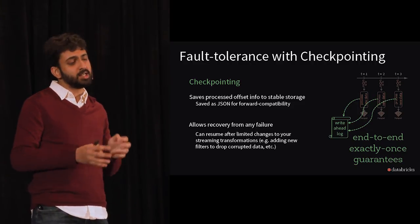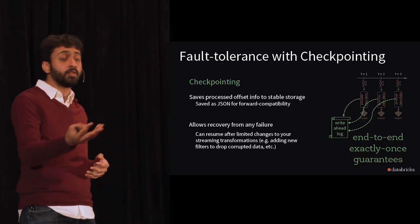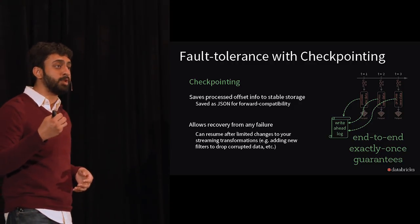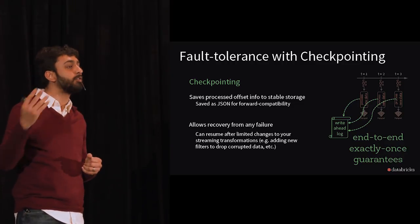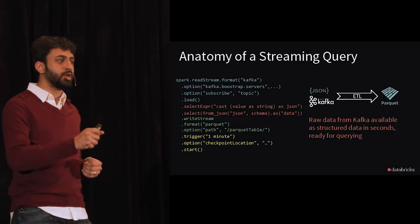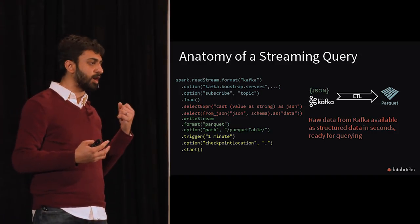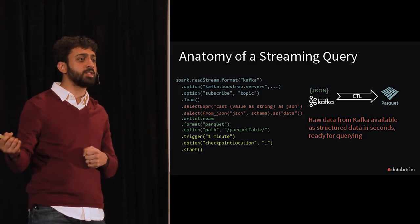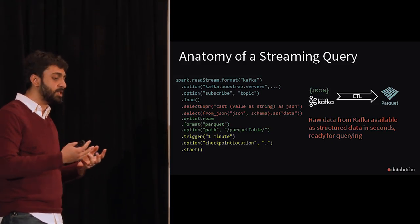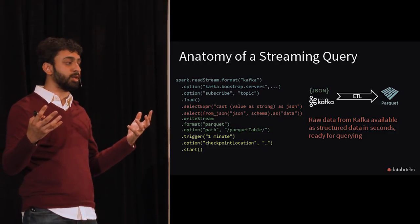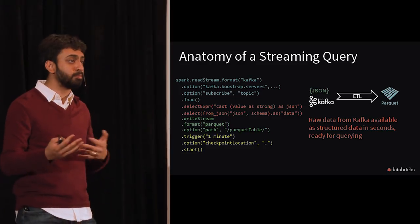You also get the guarantee that even if your code changes within certain constraints, you can always recover and start where the previous version left off. This is useful when you receive corrupt data that causes a query failure — you can add an additional filter to handle those corrupt records and restart from where it left off. The end result is a query that converts unstructured Kafka data to structured Parquet format, making it available for downstream processing within seconds.